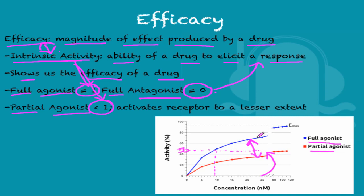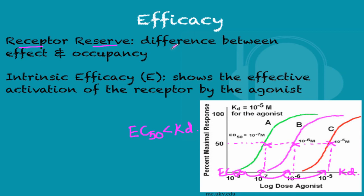The receptor reserve is the difference between the effect and the occupancy. A given percentage of occupancy produces a certain percentage of effect, and the percentage of receptors that are not used constitutes the receptor reserve.